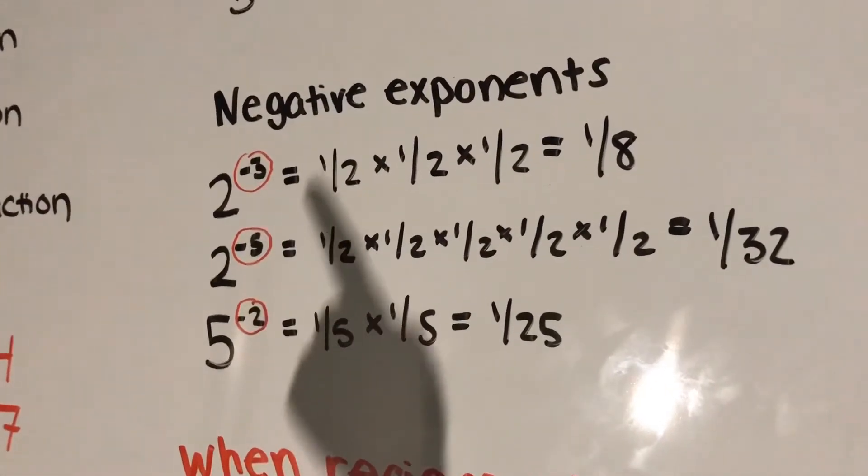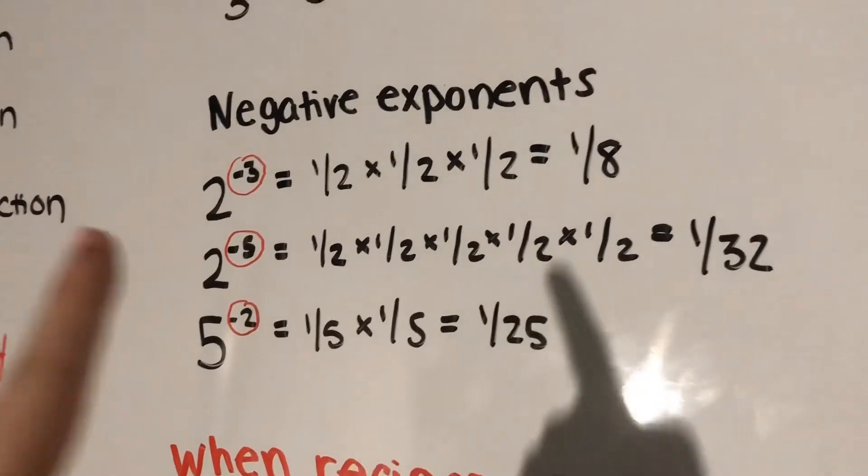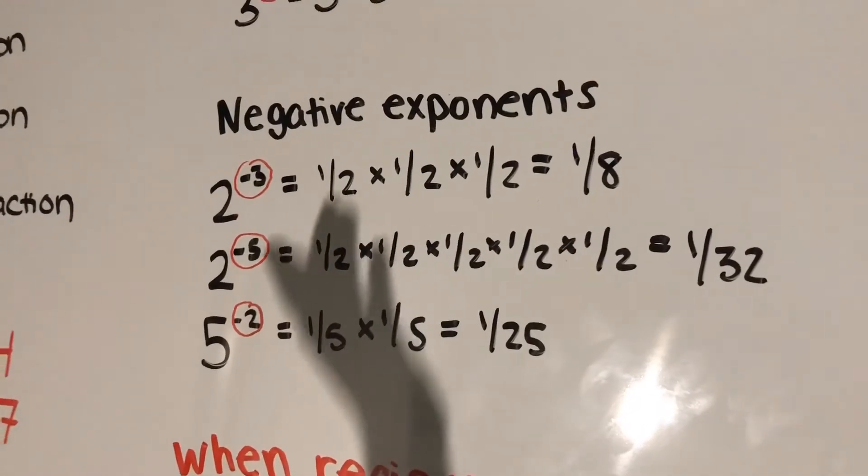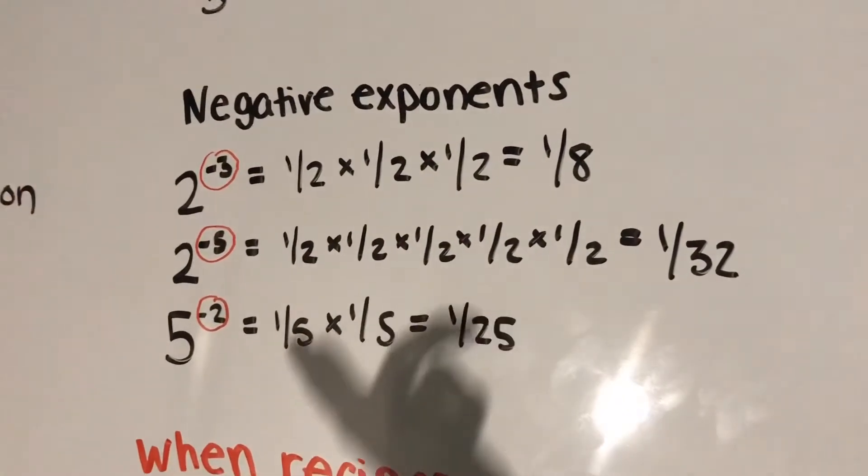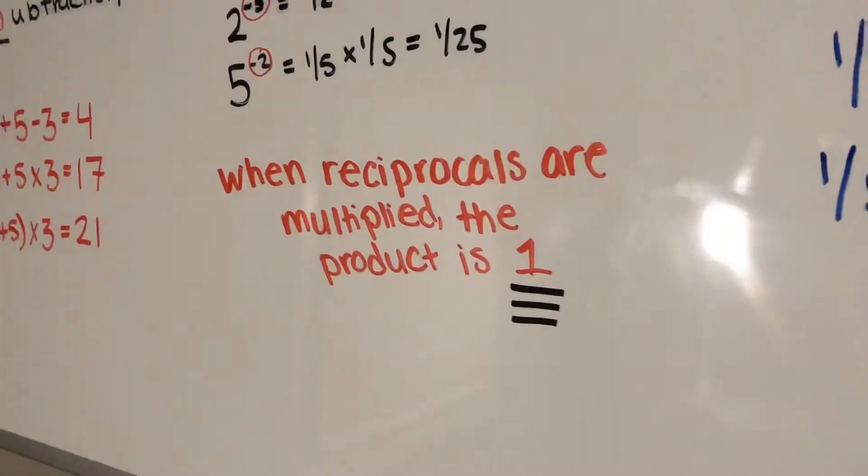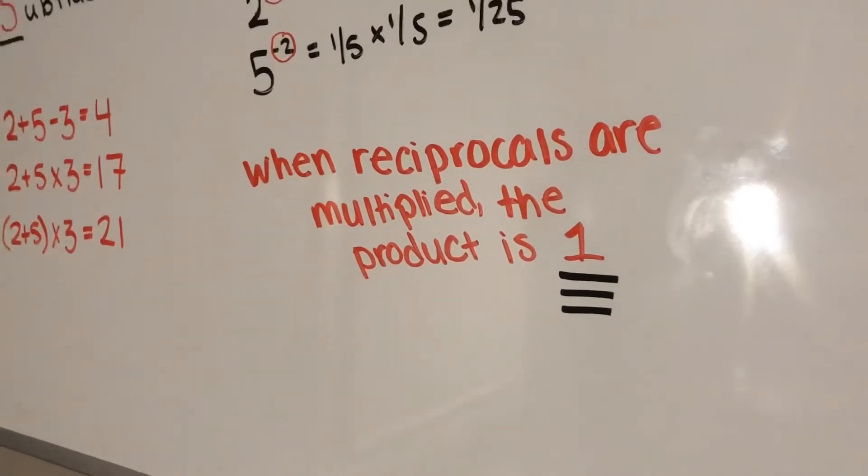Here's negative 3, so you do it 3 times, here's negative 5, so you do it 5 times. And once you have your fractions, you just keep the numerator, and then you multiply the denominators, and that's how you get your answer. You want to remember that when reciprocals are multiplied, the product is always 1.